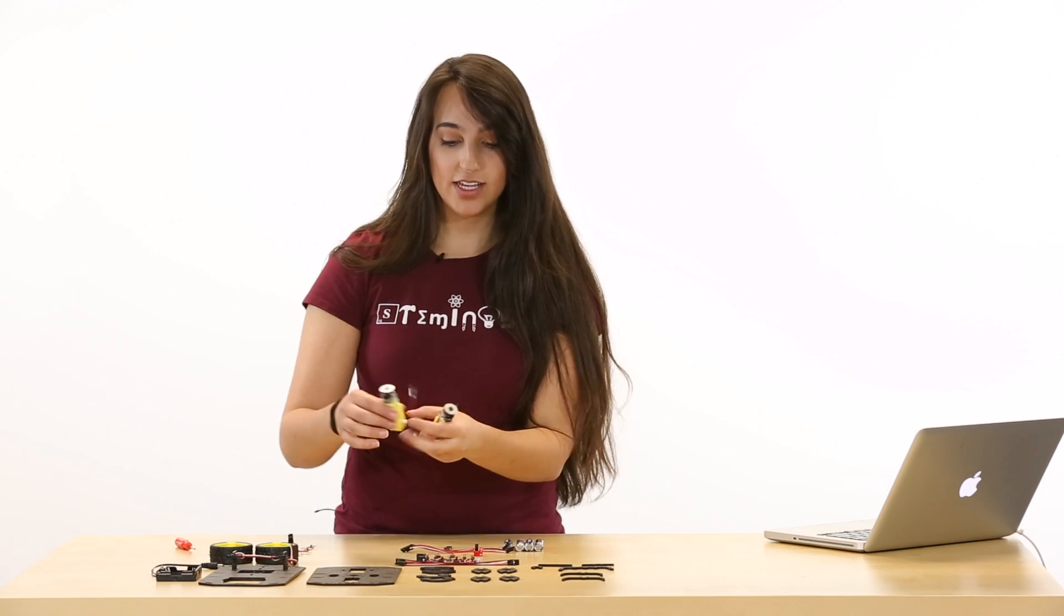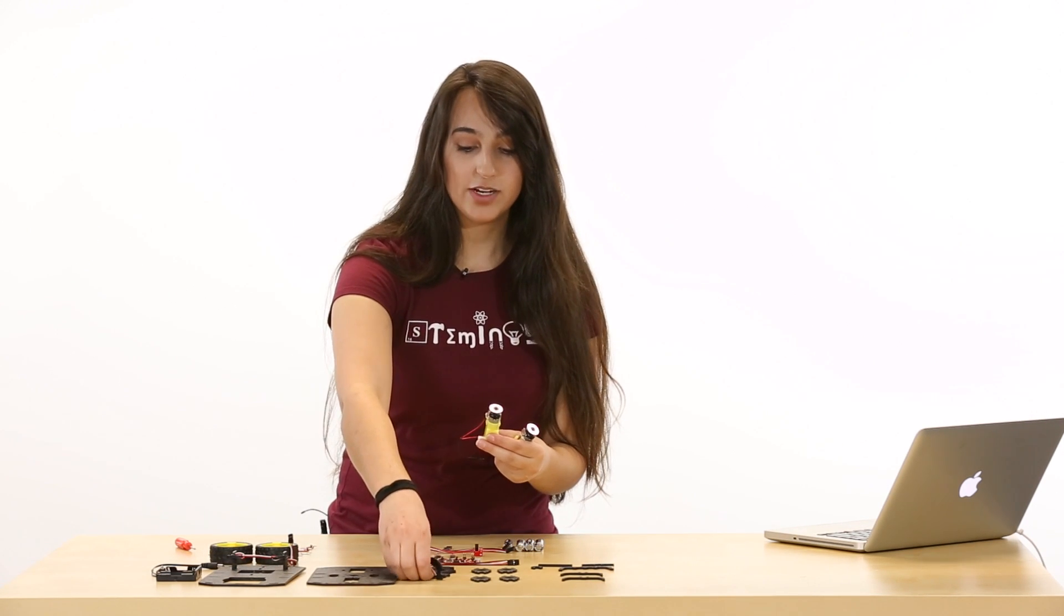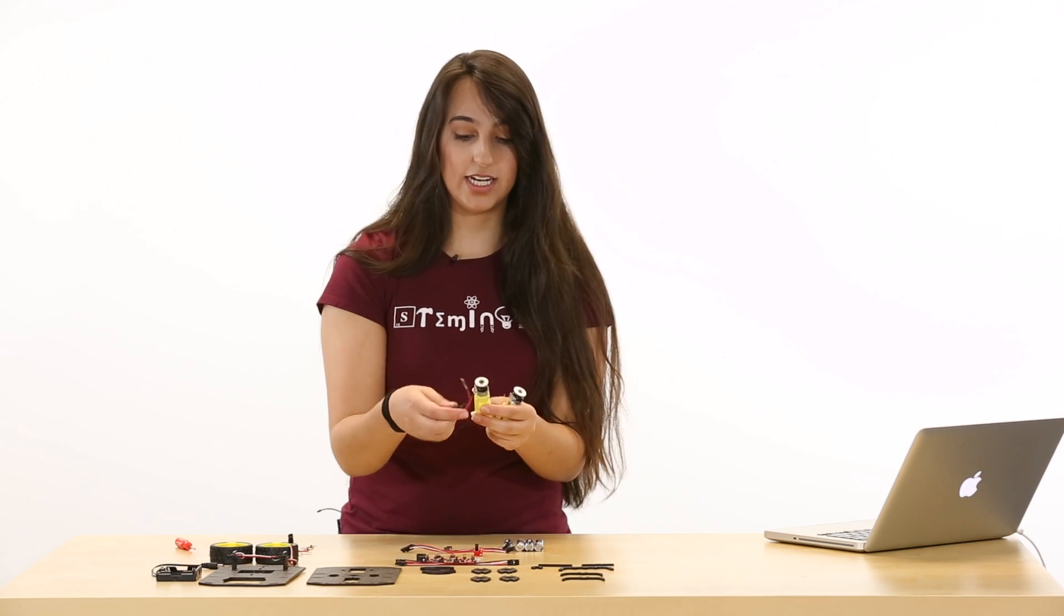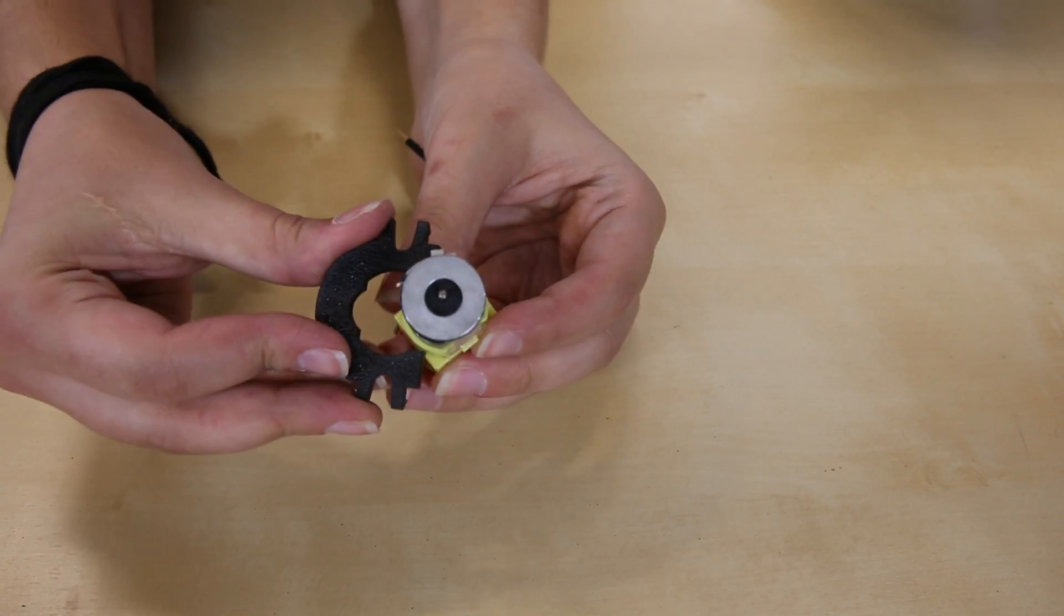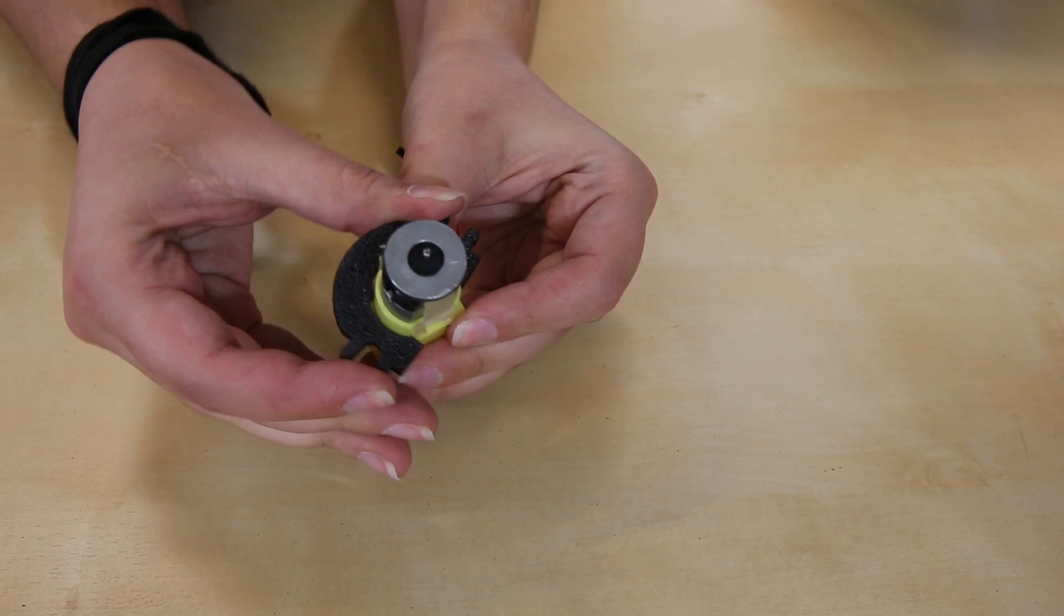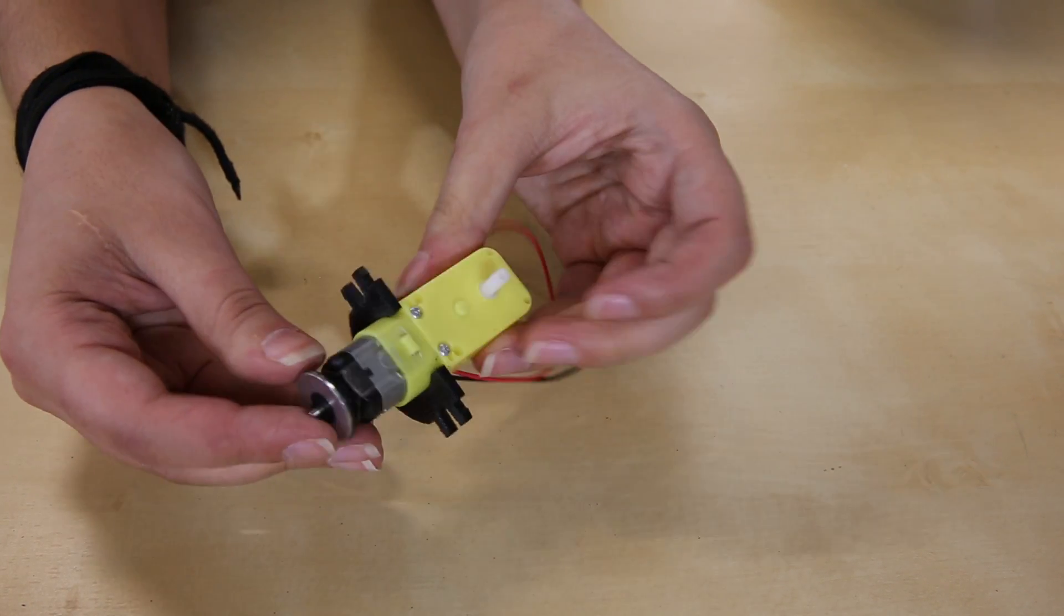Now that we've attached that to the base plate, we're going to take our motors and we're going to take our rear mounts and our front mounts and we're just going to attach them. When you're attaching the rear mounts, you're going to want to put it on sideways and then twist it on so that it has a good snug fit.